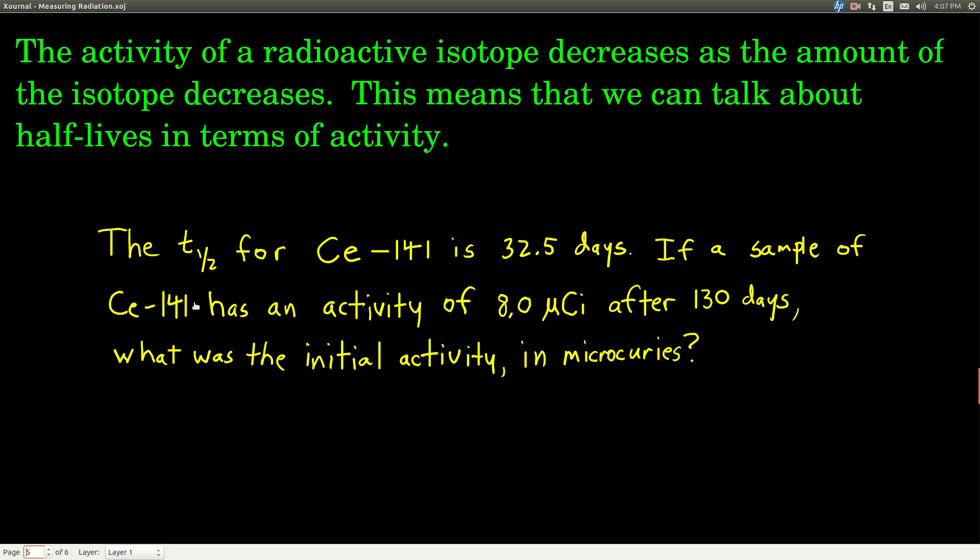So given that the half-life for cerium-141 is 32.5 days, and if you have a sample of cerium-141 that has an activity of 8.0 microcuries, remember this micro means times 10 to the minus 6. If the activity after 130 days is 8 microcuries, what was the initial activity in microcuries?